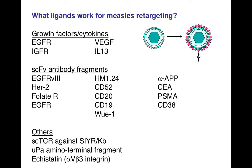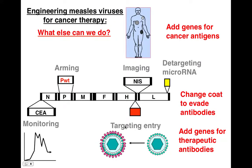Targeting options for oncolytic measles include EGFR, VHF, IGFR, and IL-13, using various antibody fragments. You can also use scTCR against receptors like KB, uPA, and integrin-binding fragments — integrin being a type of adhesion molecule. You can arm the virus with genes for cancer antigens, change the coat to evade antibodies so it can penetrate deeper into the body, and add genes for therapeutic antibodies — since sometimes the immune system won't naturally make antibodies against cancer cells.